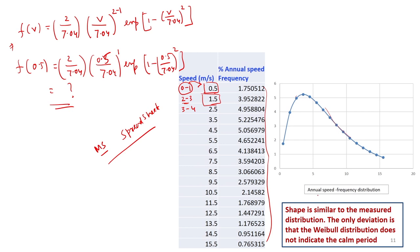This is the annual speed frequency distribution with frequency in percentage. We have compared this shape with the measurement available to us. The shape is similar to the measured distribution; the only deviation is that the Weibull distribution does not indicate the calm period. Otherwise, this distribution can be immediately applied for finding out the annual speed frequency distribution.